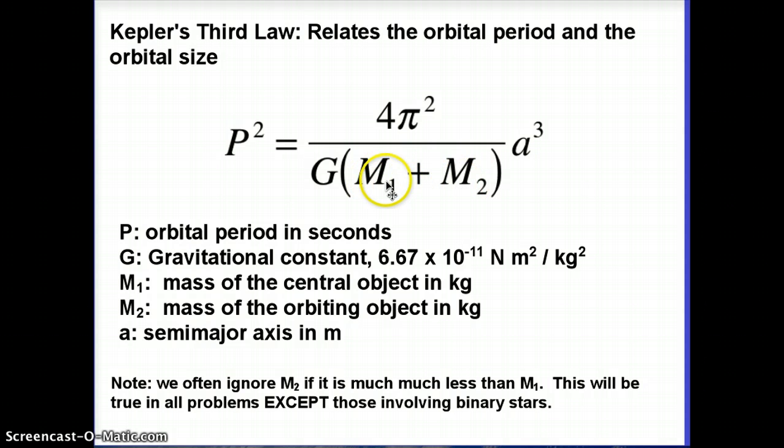The semi-major axis a is going to come into it. This automatically shows us that for objects that are farther from the Sun, it takes them longer to go around. The masses of the two objects come in this middle term, which has a lot to do with the law of gravity. G is the gravitational constant, 6.67 times 10 to the negative 11.